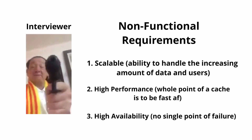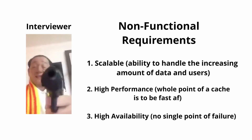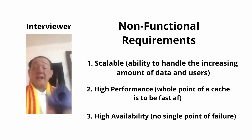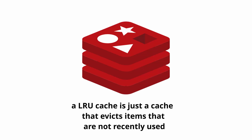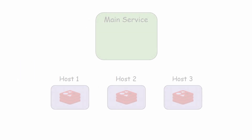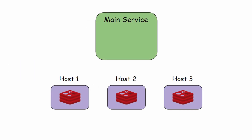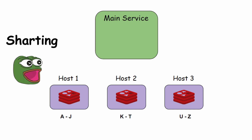We should also add availability as a requirement, since we need to ensure we do not lose any data during hardware failures and that the cache is still accessible in case of network partitions. Let's assume we have a fully coded up LRU cache. Hosting the cache on one server gives us a single point of failure, so let's make it distributed by moving the cache to its own host server. Each host can store a chunk of data, also known as sharding. Since the data is split among several hosts, we can store much more data in memory.